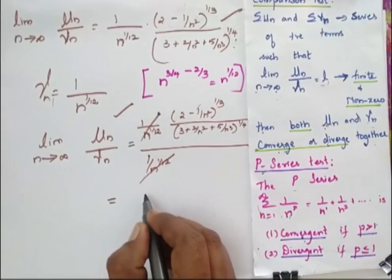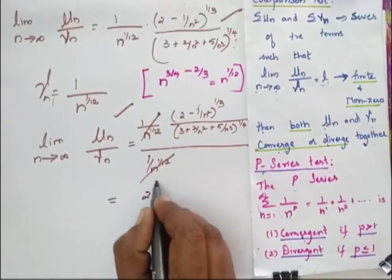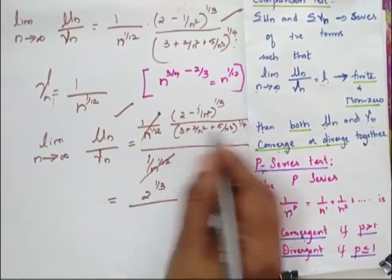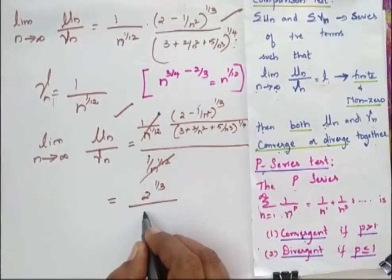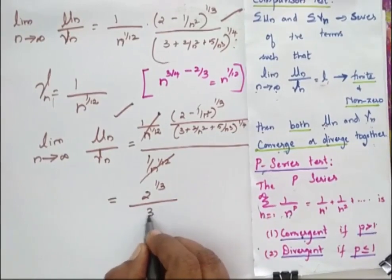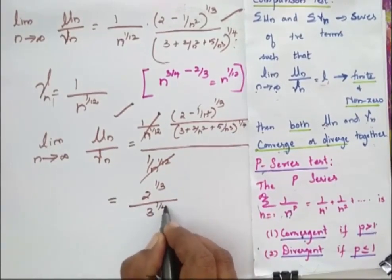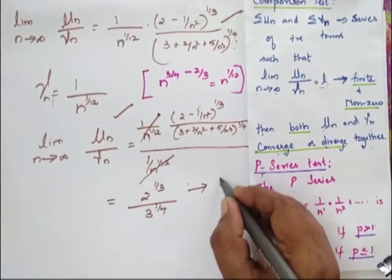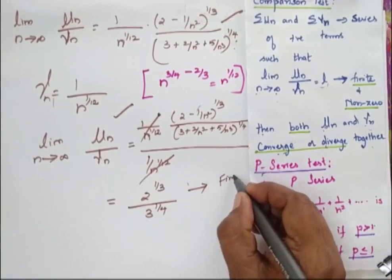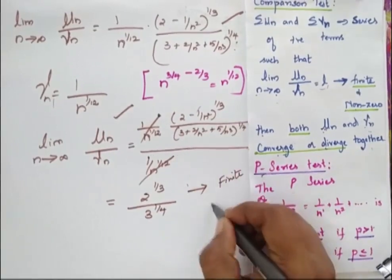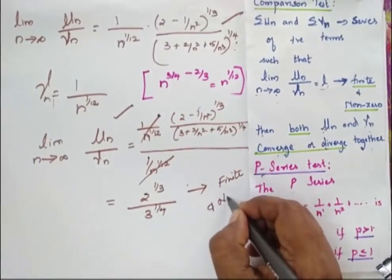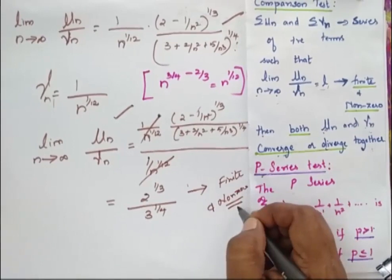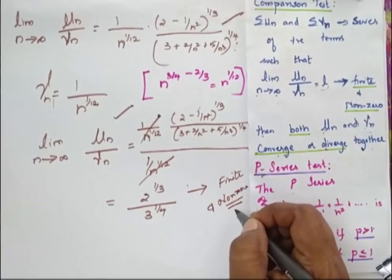The 1/n² terms become 0, so I get 2^(1/3) divided by 3^(1/4). This term is finite and non-zero.